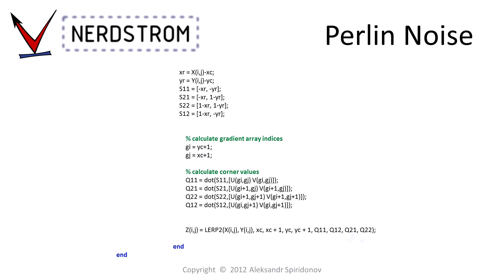Next, we calculate the displacement vectors S. Since we know that every cell is a unit square, if we know the relative location of the point inside the cell, we can compute all the necessary vectors. XR and YR store the coordinates of the sample point relative to the lower left corner of the cell. The rest is a little bit of vector math. Since MATLAB array indices start with 1 and not 0, we have to add 1 to the truncated sample point coordinates Xc and Yc to obtain the gradient vector indices Gi and Gj.